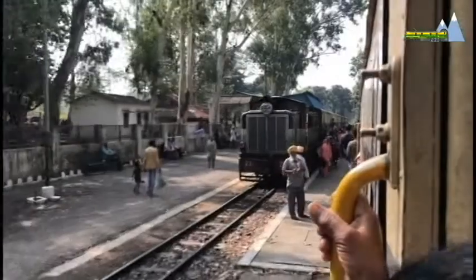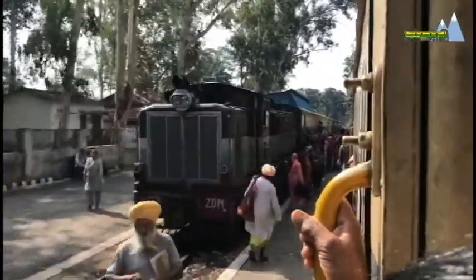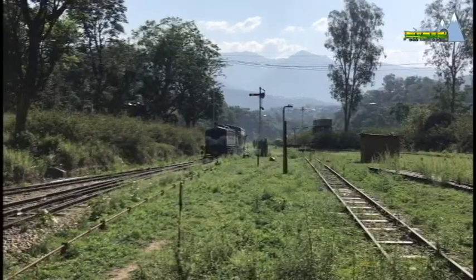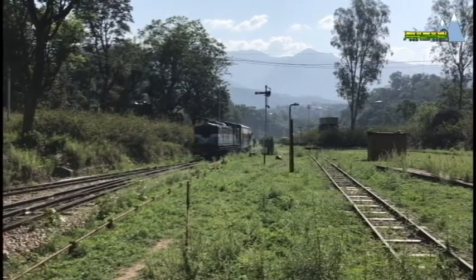Most diesel hydraulic locomotives such as this ZDM class locomotive use two torque converters, one for each direction of travel.